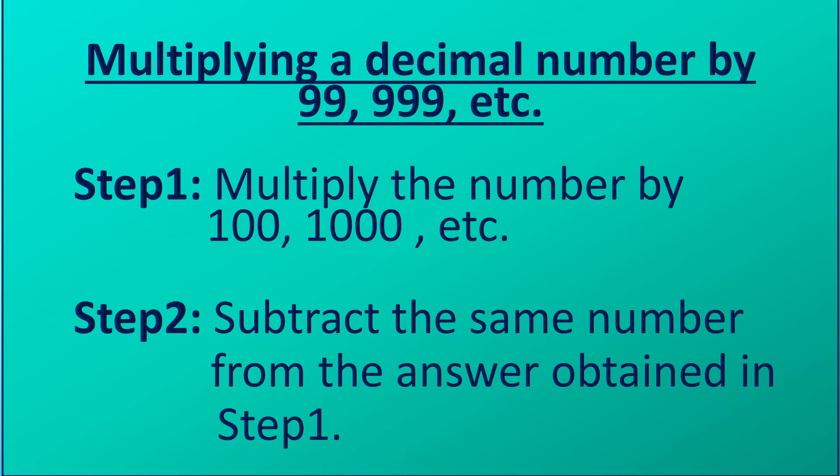Step 1: multiply the decimal number by 100, 1000, etc. Step 2: subtract the same decimal number from the answer obtained in step 1.